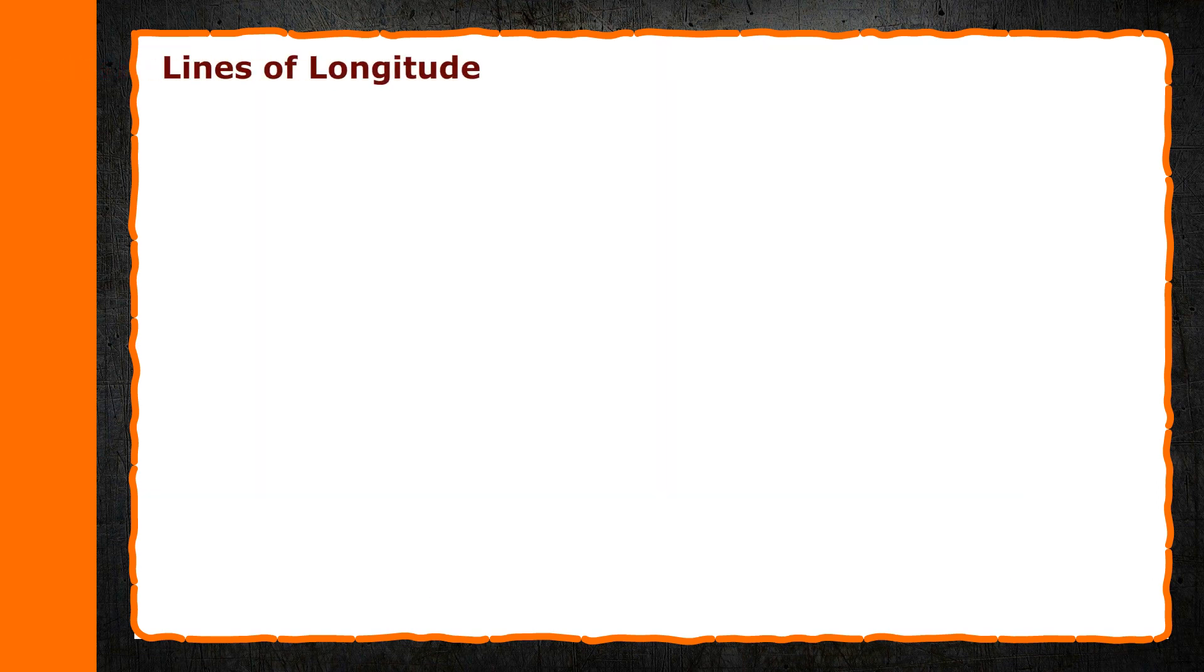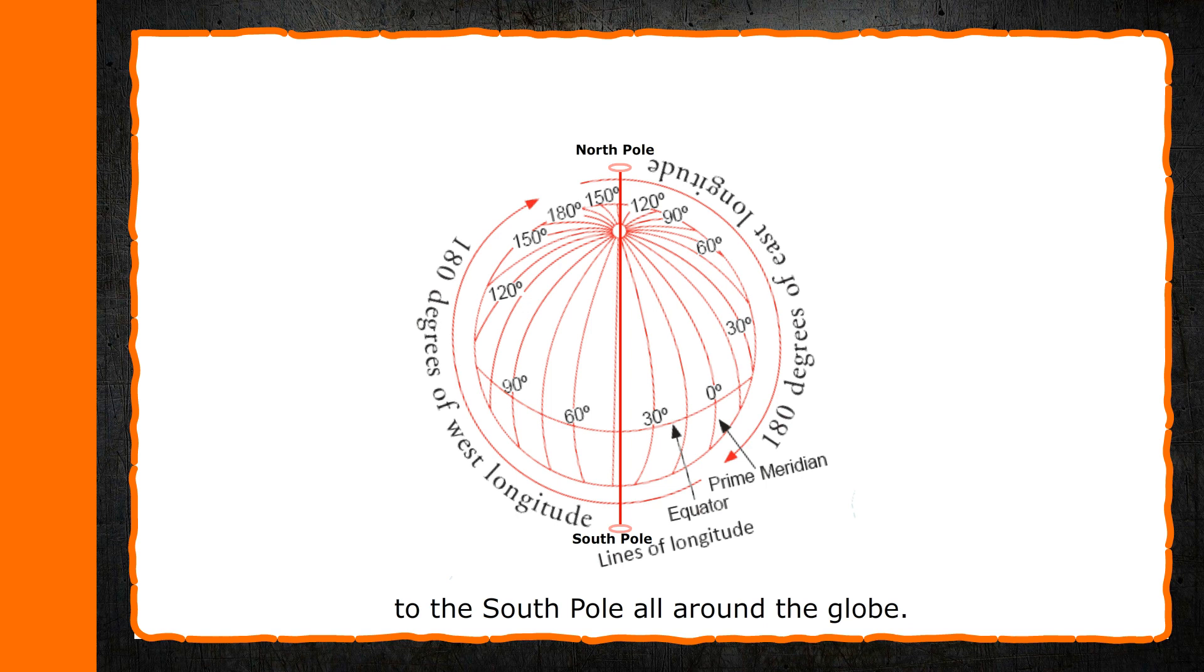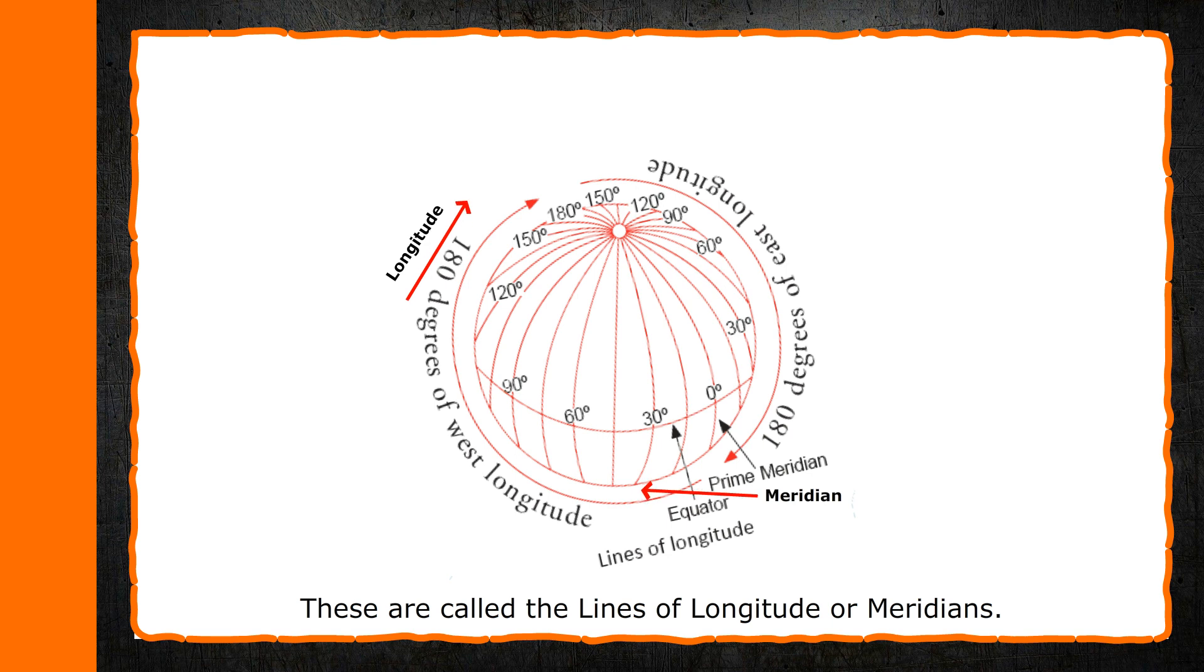Lines of Longitude. We take the north pole and the south pole as the standard reference points and draw equidistant lines from the north pole to the south pole all around the globe. These are called the lines of longitude or meridians. All the lines of longitude are of the same length. They meet at the poles and are farthest from each other at the equator. There are 360 lines of longitude. They help in determining time.